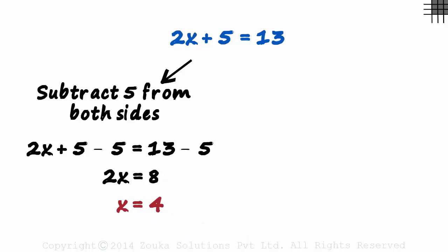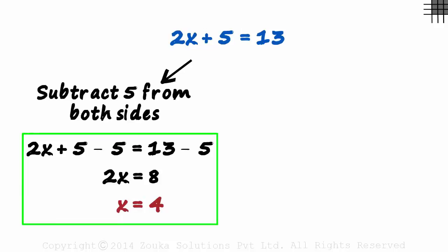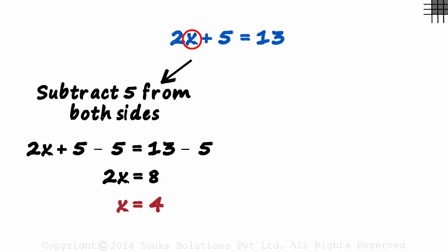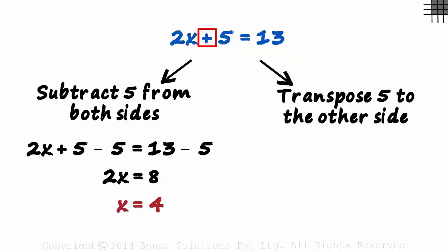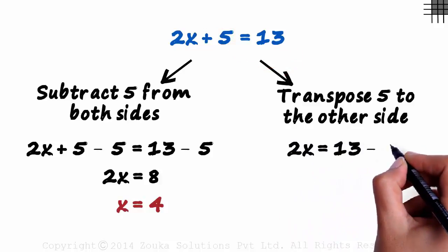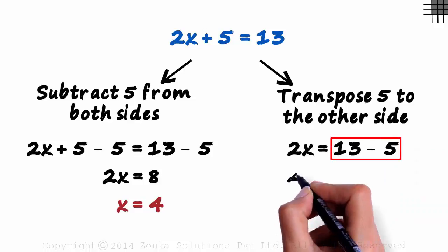So first we eliminated the 5 and then the 2. Though it was a very logical way to go about it, it may prove to be a bit lengthy for your competitive exams. The transpose method gets you to the answer a bit faster. To have just x on the left hand side, we first transpose 5 to the other side. Plus, when transposed to the other side, becomes a minus. Transposing 5 to the other side gives us 2x equals 13 minus 5, and 13 minus 5 is 8.